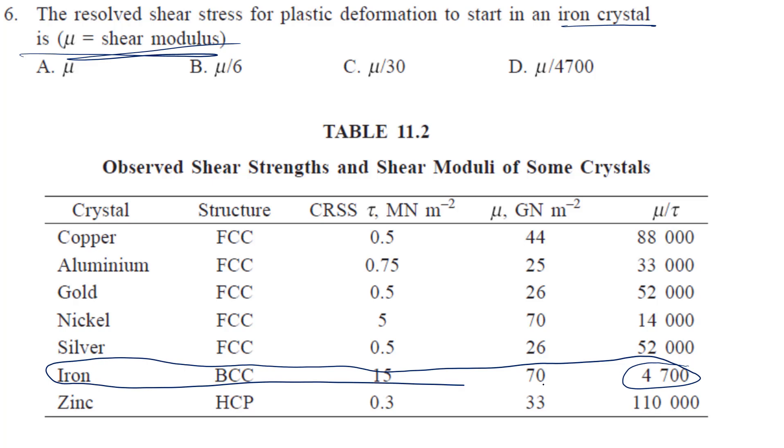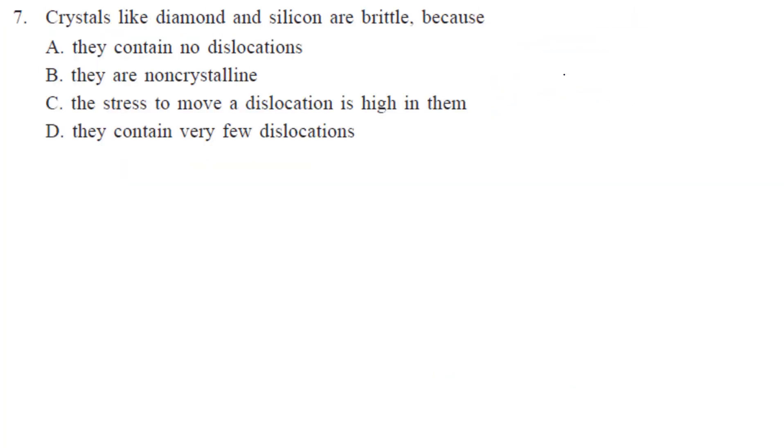So you can see here, your iron. Here it is given mu upon tau is equal to 47000. So tau is equal to mu by 47000. That is what it is asking. Next question.